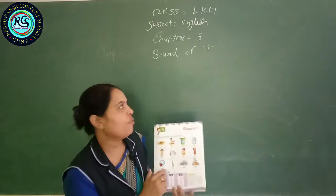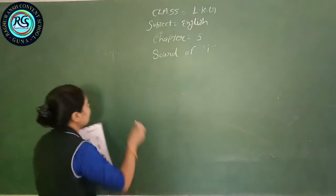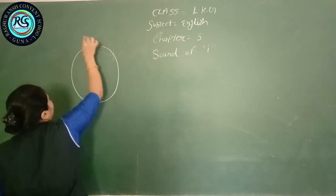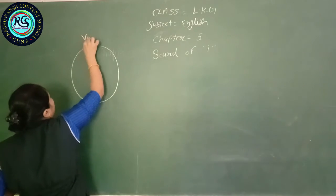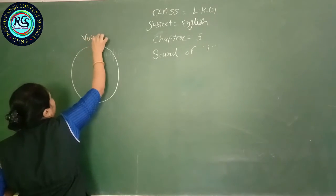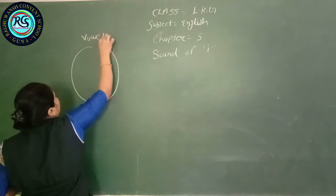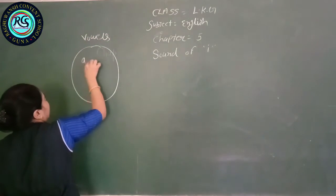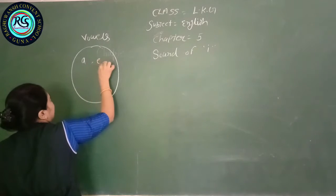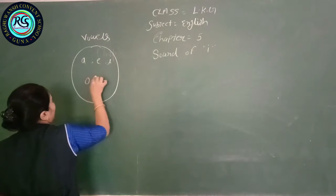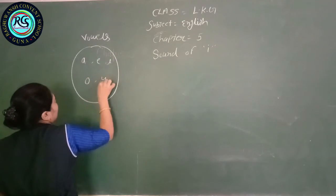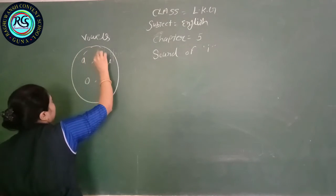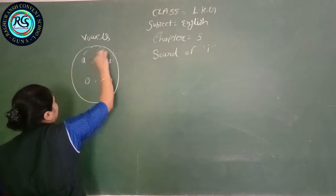How many vowels are there? Five. A, E, I, O, U. How many vowels are there? A, E, I, O, U — five vowels.